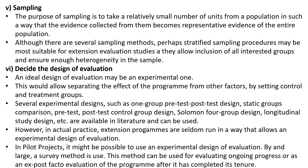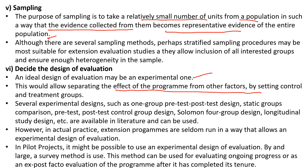Fifth, sampling. The purpose of sampling is to take a relatively small number of units from a population in such a way that evidence collected from them becomes representative of the entire population. In large extension program areas, surveying every farmer is not possible, so a sample — for example, 20 to 30 farmers from among all participants — is selected and their data becomes representative evidence.